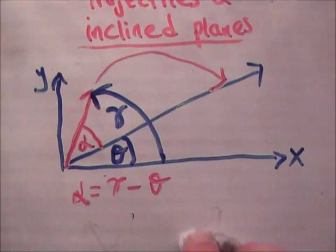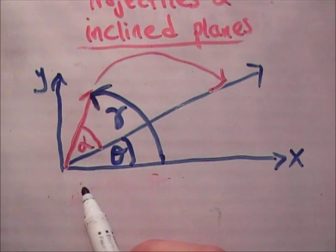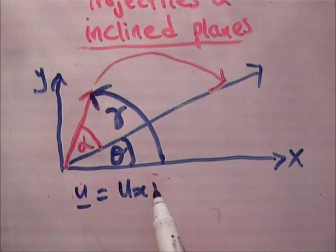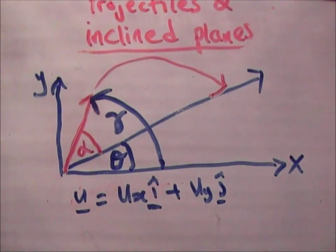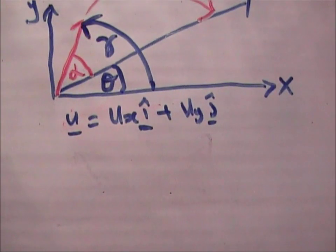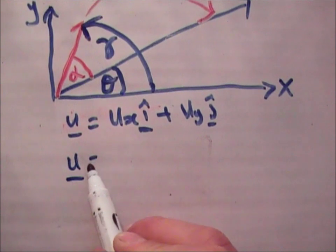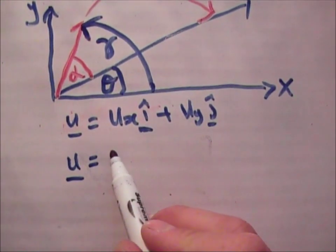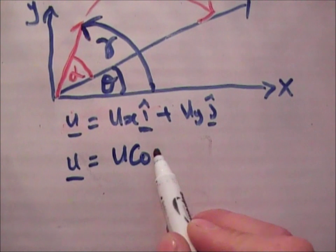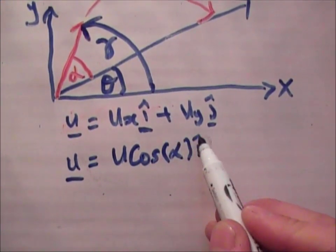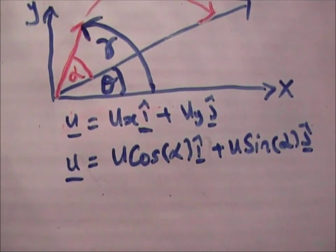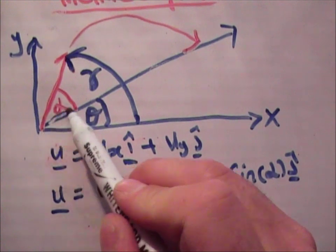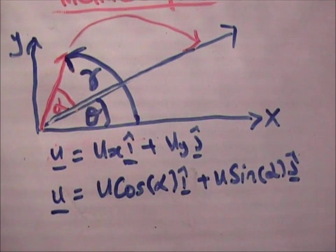So we need to resolve the velocity vector u. We remember from chapter exercise 3a that u is equal to u sub x i-hat plus u sub y j-hat. If we resolve this we are going to get that it is u times cos of alpha i-hat plus u times the sine of alpha j-hat. That is because we are taking that it is along this plane here rather than along the x-axis.